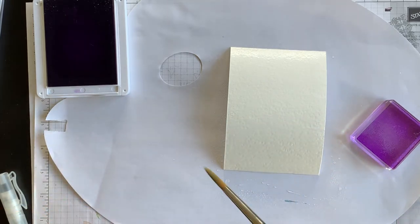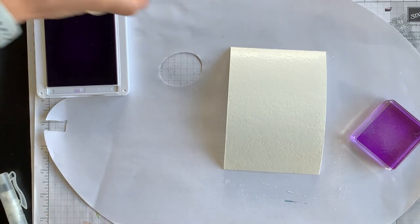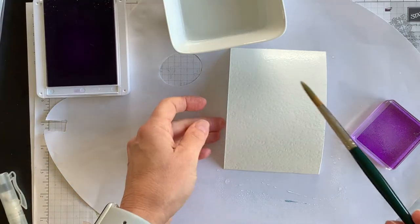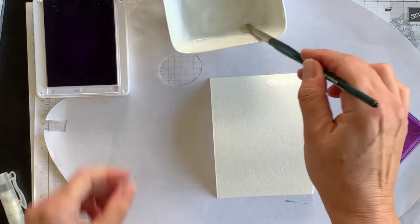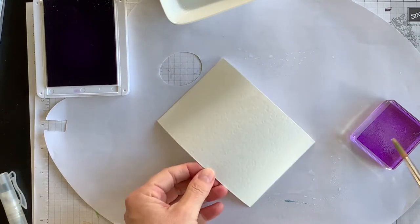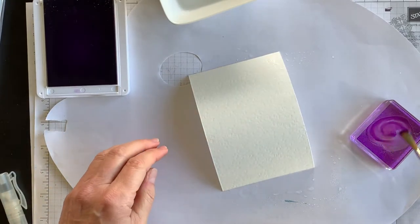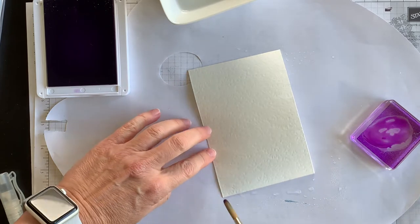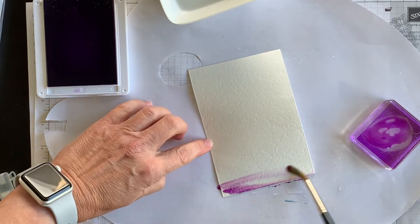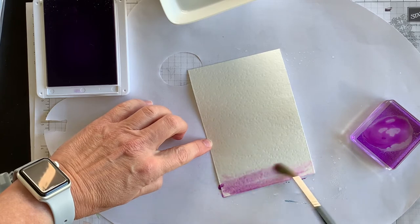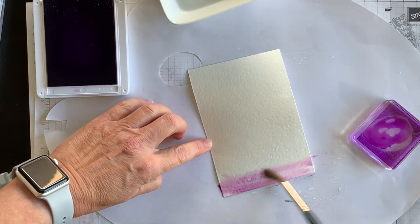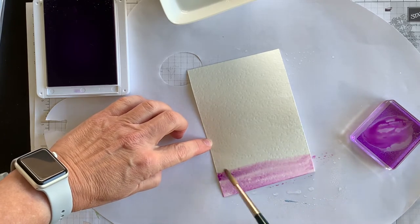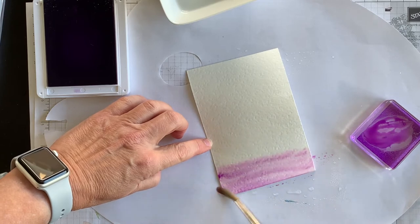So the other thing I have handy is just a little bowl of water. I'm going to wet my paintbrush and then what I'm going to do is rub my paintbrush on the clear block, and I'm going to start at the bottom and I'm going to pull the color in one direction across the bottom of my watercolor paper.